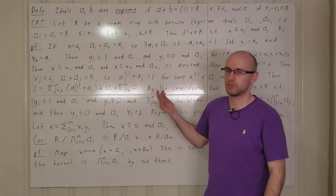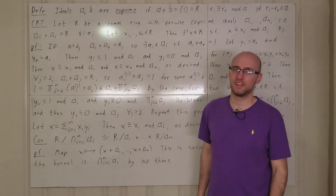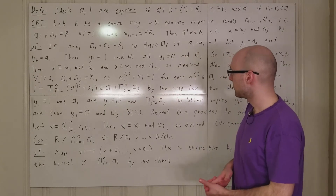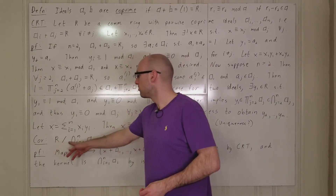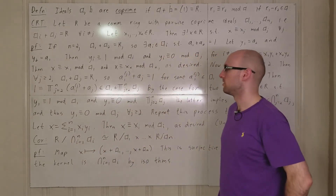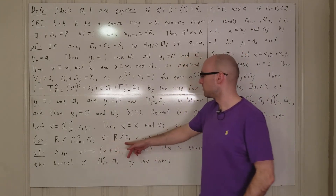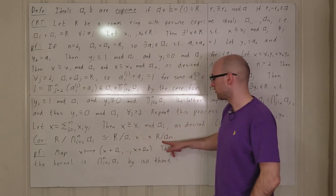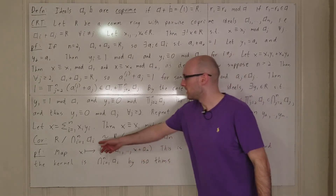So that's the Chinese Remainder Theorem. We also have this corollary: if you take r and quotient by the intersection of the pairwise co-prime ideals a1 through an, this is isomorphic to the direct product of r/a1 through r/an. To prove this, define a map from r to this product sending x to (x+a1, ..., x+an).